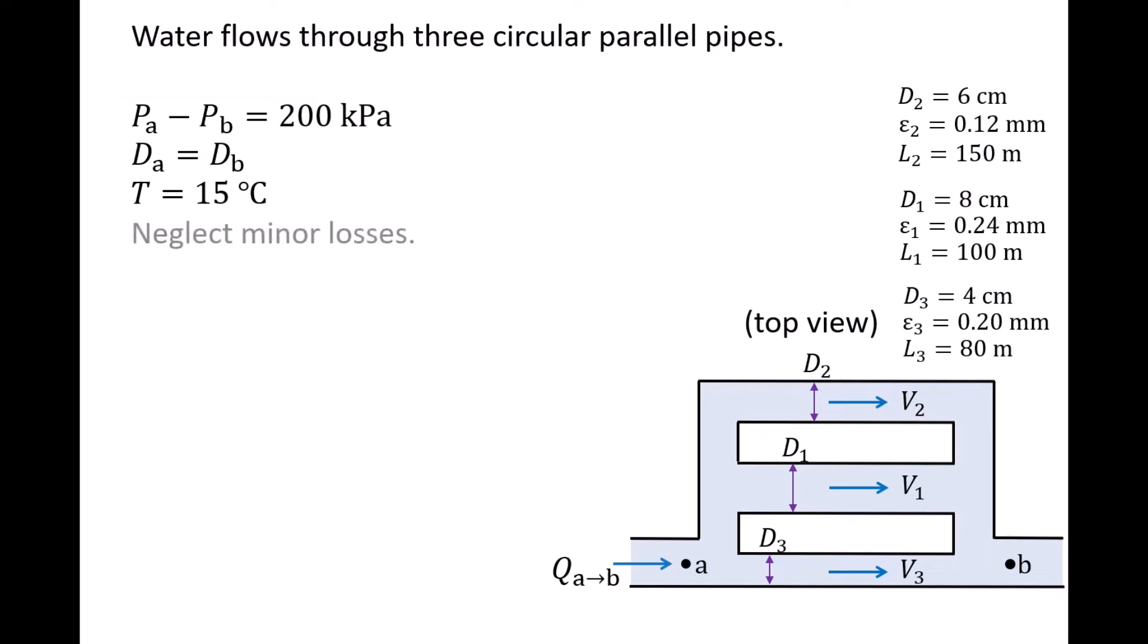To simplify this problem, we will neglect minor losses and only consider the major losses. That is, we will only consider the losses due to friction in straight runs of pipe. This is a reasonable assumption in many situations where there are very long runs of pipe.